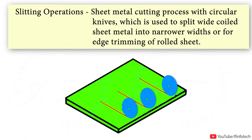Slitting is a metal sheet cutting process with circular knives, which is used to split wide coiled sheet into narrower widths or for edge trimming of rolled sheet. Slitter knives are mounted on two arbors together with spacers, and the spacers determine the width of cut.